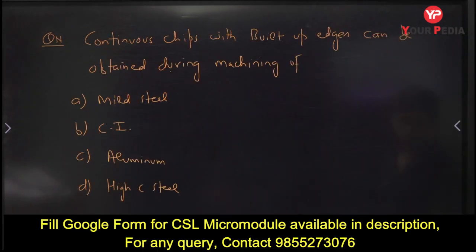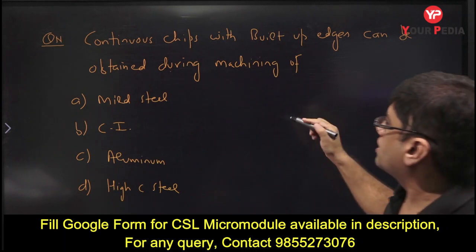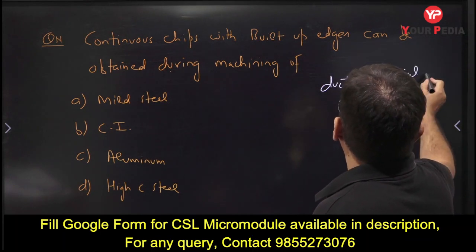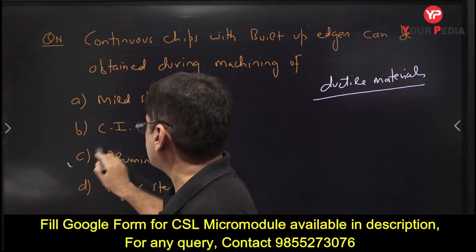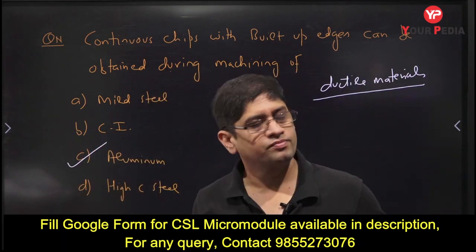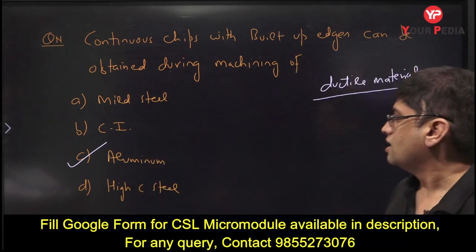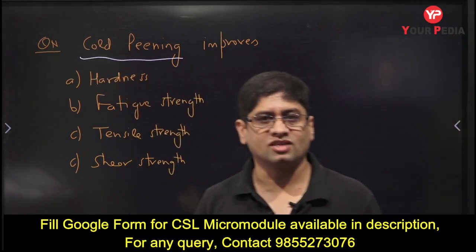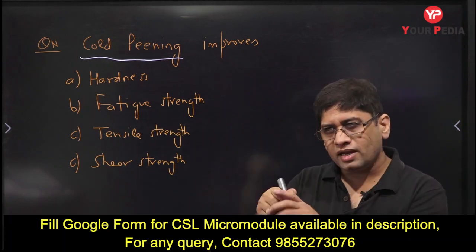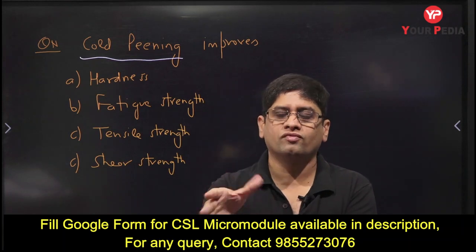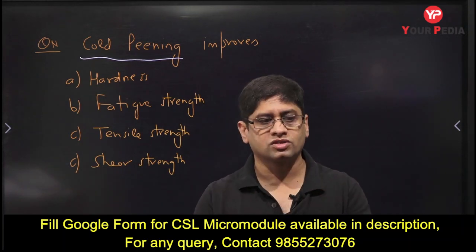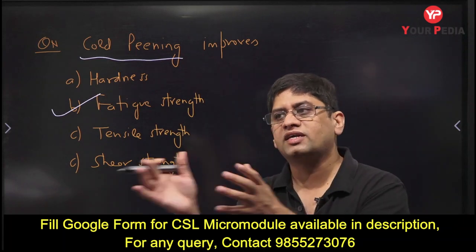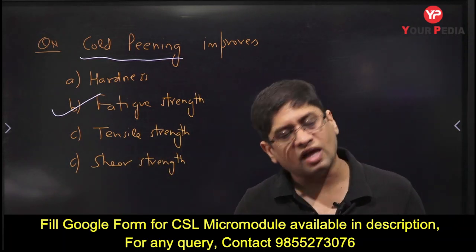Continuous chip with built-up edge is formed in ductile materials. Aluminium is an example of a ductile material. In the exam — 40 questions in 40 minutes — you do not have time to think; use concepts and proceed. Cold peening is also an important process in industries, especially shipbuilding. In cold peening, small spherical balls are thrown at high speed onto the surface, applying compressive force, increasing compressive strength and ultimately improving fatigue resistance.